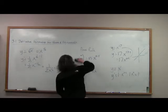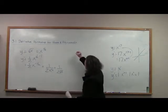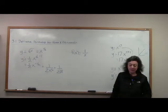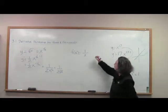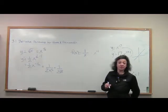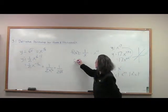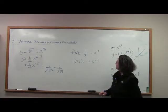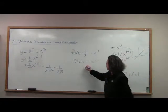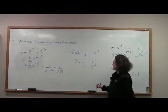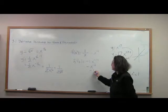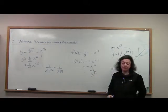What if I have the function 1 over x? We want to write that as x raised to some power, so write it as x to the negative first power. Bring your exponent down in front and subtract one from your exponent. We get negative x to the negative second power. If we wanted to write this without a negative exponent, that's equivalent to negative 1 over x squared.